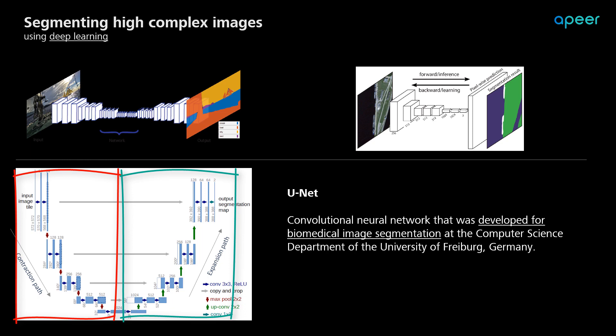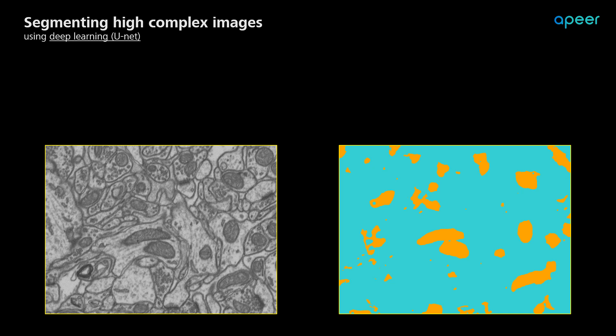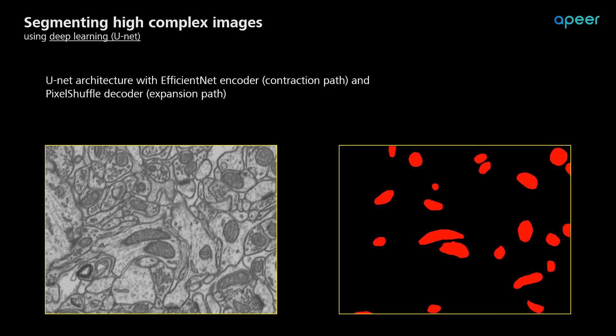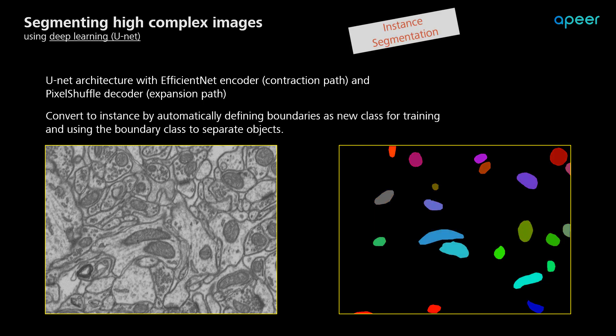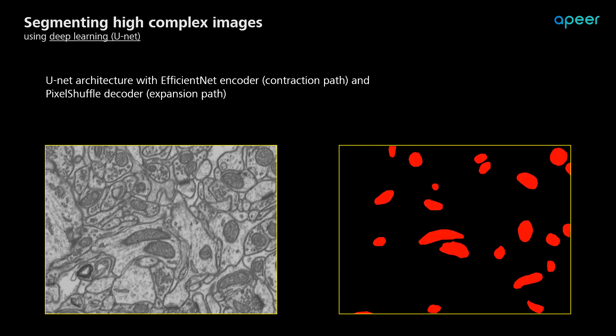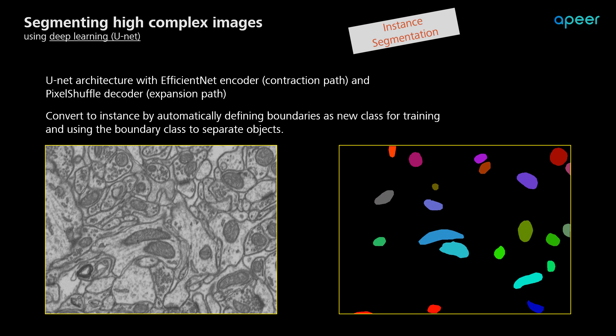Let's have a look at the mitochondria segmentation results using U-Net. In this example, the traditional U-Net architecture has been used, but modified using EfficientNet as encoders or contraction path, and PixelShuffle as decoder or the expansion path. This semantic segmentation has been converted to instance segmentation by automatically defining boundaries between mitochondria and adding them as new classes for U-Net training. And these boundary classes are later used to separate the objects.